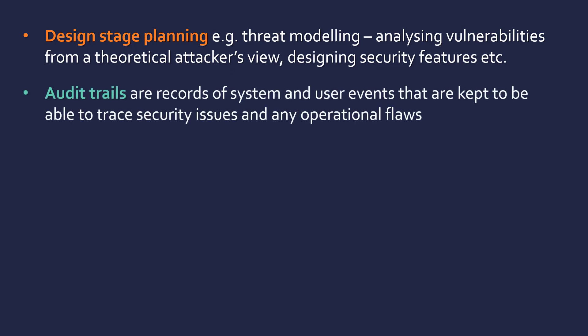Audit trails sound like the most boring thing ever, and they are records — records of system and user events that are kept to be able to trace security issues and any flaws that happen in operation. These are records of everything that happens in the system, everything a user does to interact with it. You can then look back and trace any issues; if something's starting to become a problem, you can action that to try and fix it.